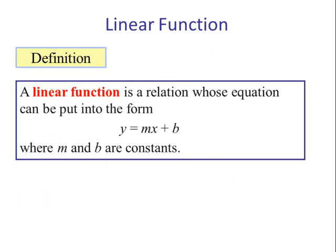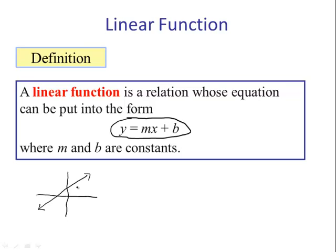Linear function definition: a linear function is a relation whose equation can be written in the form Y equals MX plus B, where M and B are constant numbers. This is the easiest type of function. If we think about the rule of four, we know that the graph of a linear function is a straight line. We have looked at tables of values, and word problems for linear equations in previous videos. So for a linear function, we can express it as an equation, view its graph, look at a table of values, and also express it in words.